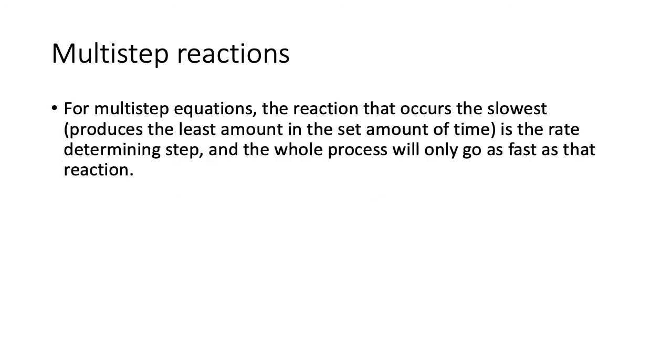All right, so for multi-step reactions, also, the reaction that occurs the slowest, produces the least amount in the set amount of time, is the rate determining step, and the whole process will only go as fast as that reaction. So I've only seen this once or twice, but the idea is that they'll give you information about how fast each reaction is going, and then they'll say, well, what is the rate determining step? It's the slowest one. So that's just a little bit about multi-step reactions, not much, and then we will continue on with rate and yield optimization in the next video. Adios!